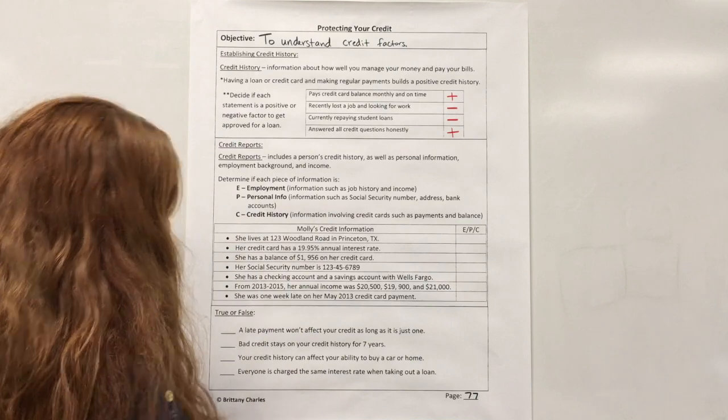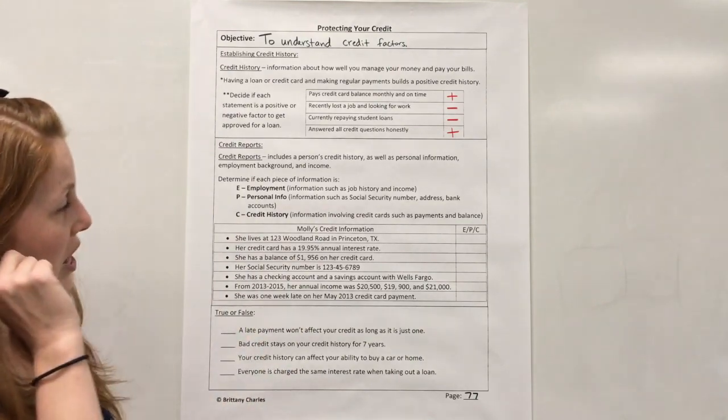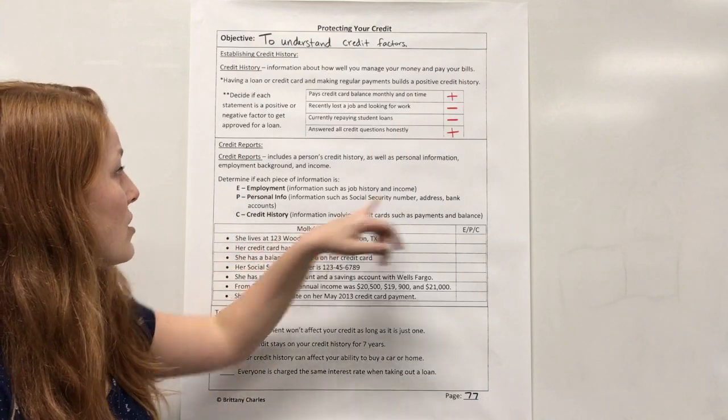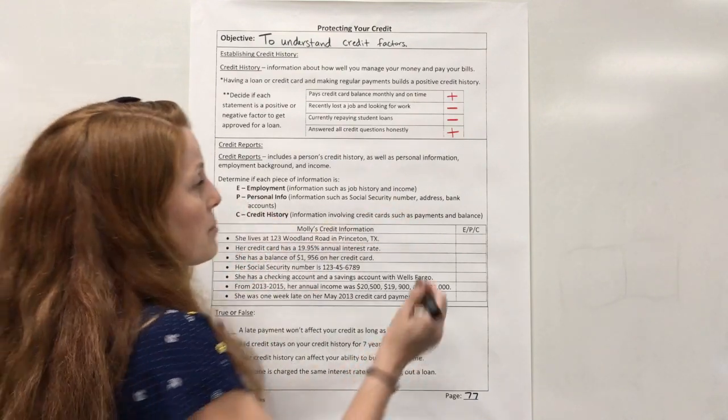Okay. So let's look at this one. It says she lives at 123 Woodland Road in Princeton, Texas. Well, that's her address. So that would have to go under P personal.